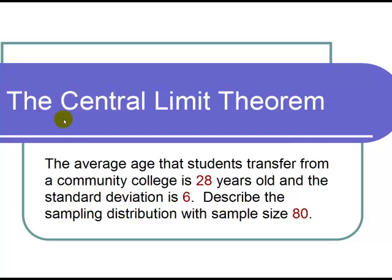This is a video on the Central Limit Theorem. The question states: the average age that students transfer from a community college is 28 years old and the standard deviation is 6. Describe the sampling distribution with sample size 80.